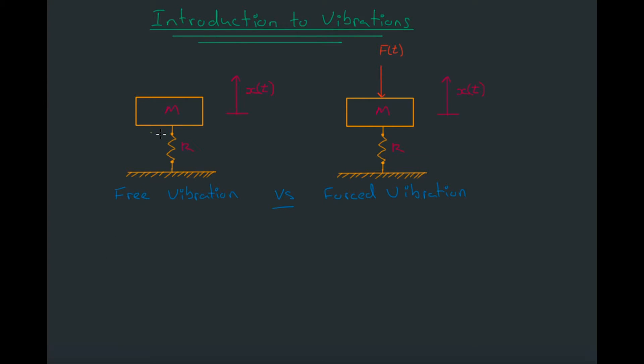Free vibration is essentially when the mass-spring system, which is a single degree of freedom system. Hopefully you know a little bit about degrees of freedom. If you don't, the single degree of freedom system just means we're assuming that we only have up and down motion in this case.